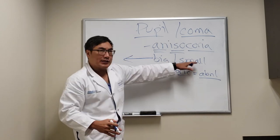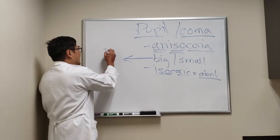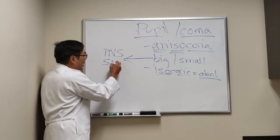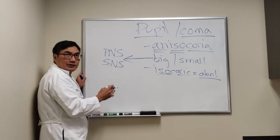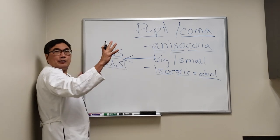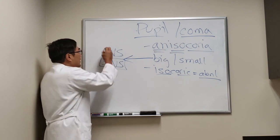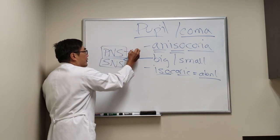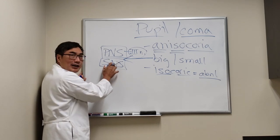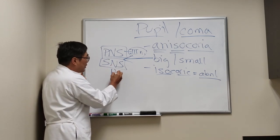When dealing with a big and a small pupil, the main considerations are: am I dealing with a problem with the parasympathetic nervous system or the sympathetic nervous system? The sympathetic nervous system dilates the pupil and the parasympathetic constricts it. This is mediated by the third nerve for the parasympathetic, and the oculosympathetic pathway for the sympathetics, which is Horner syndrome.